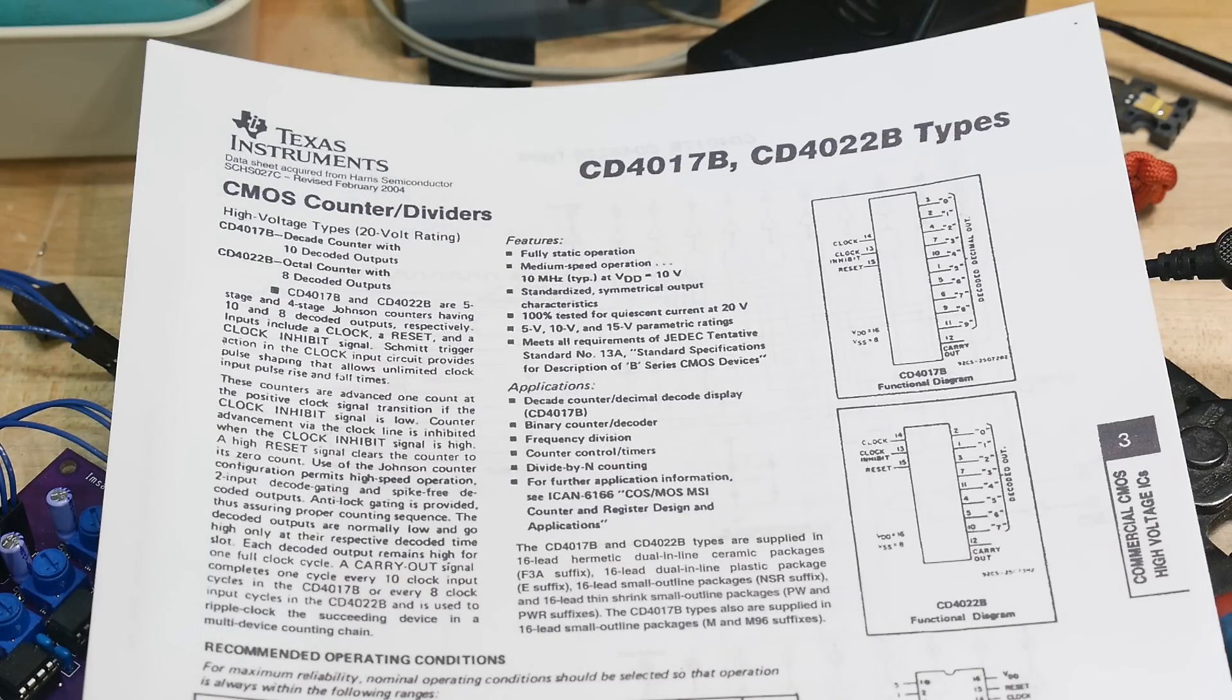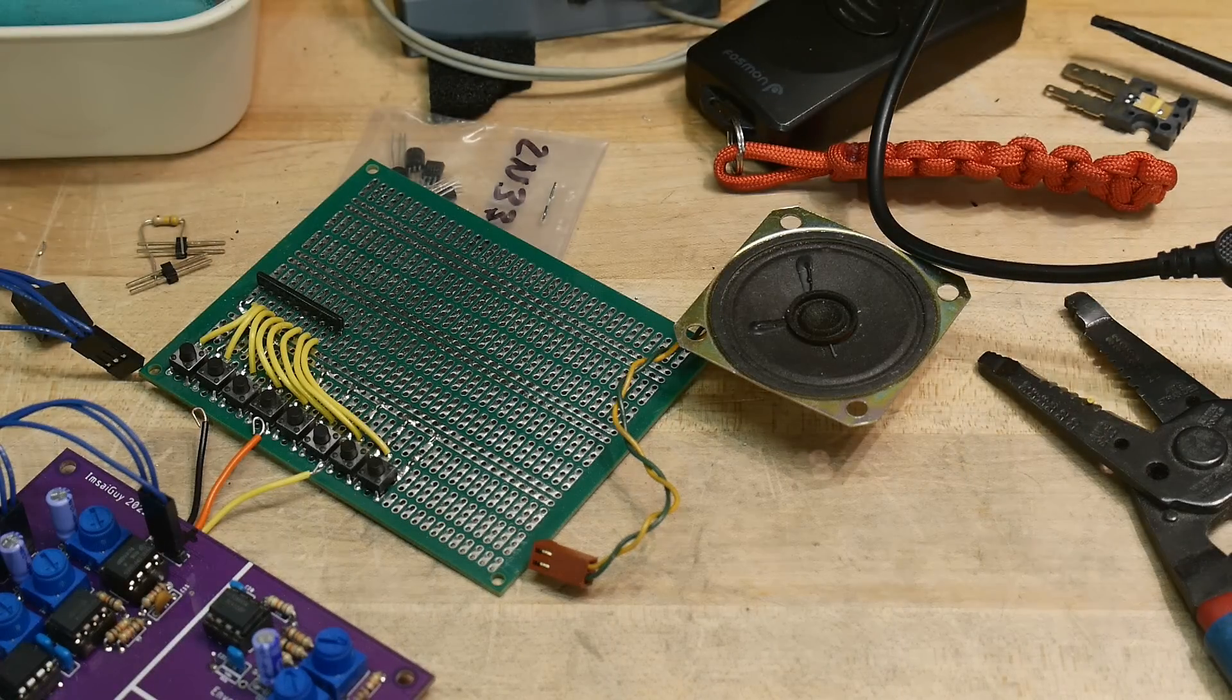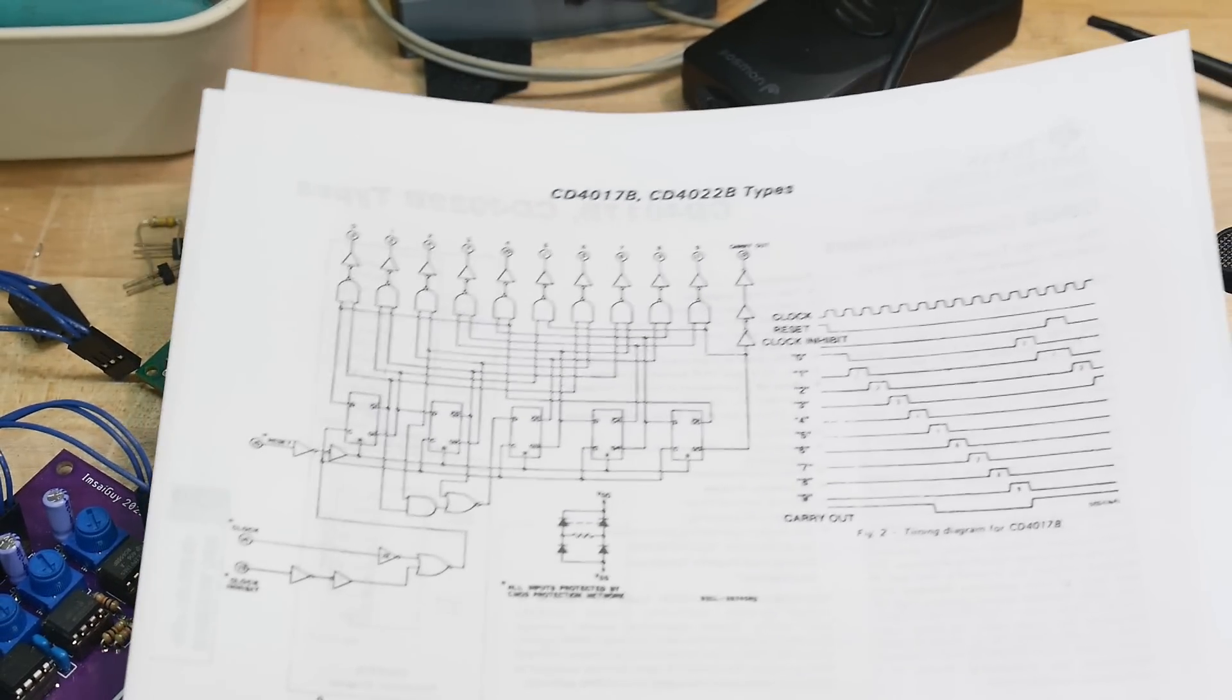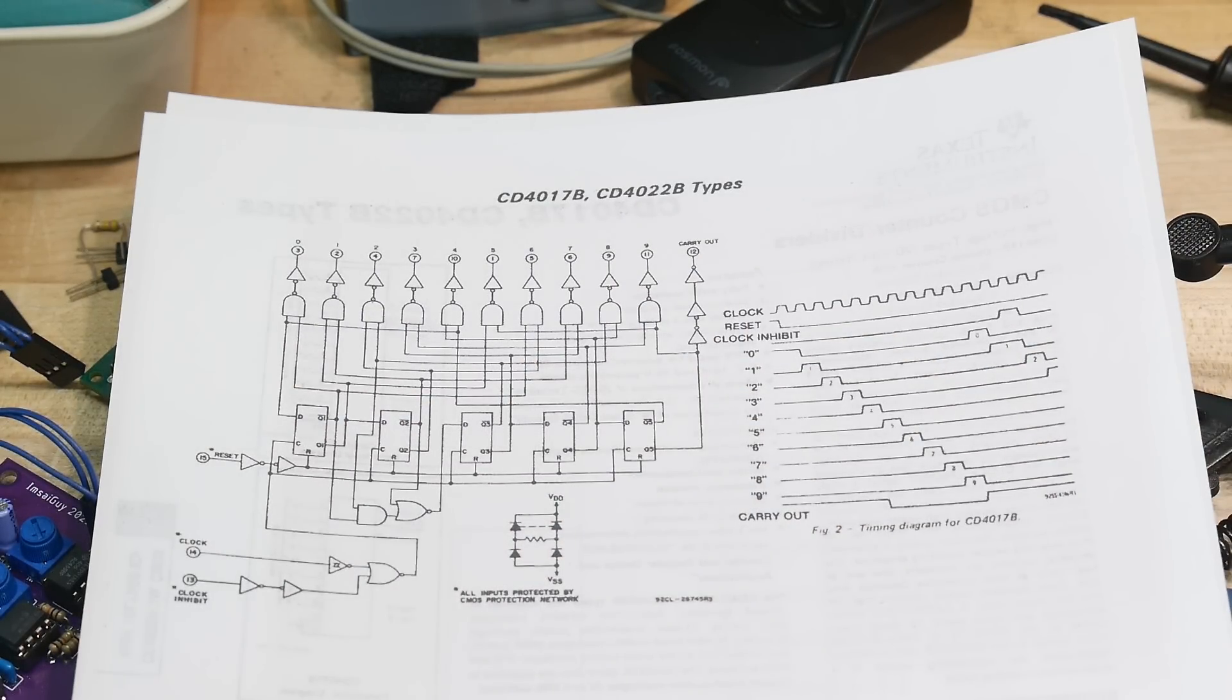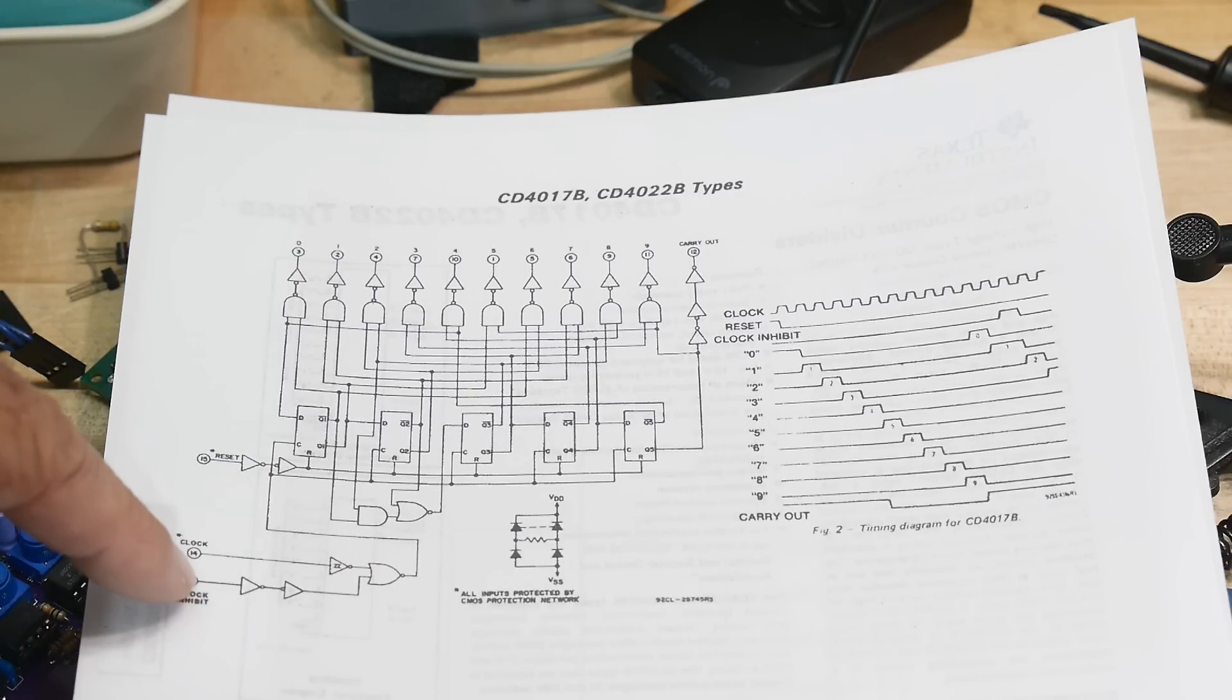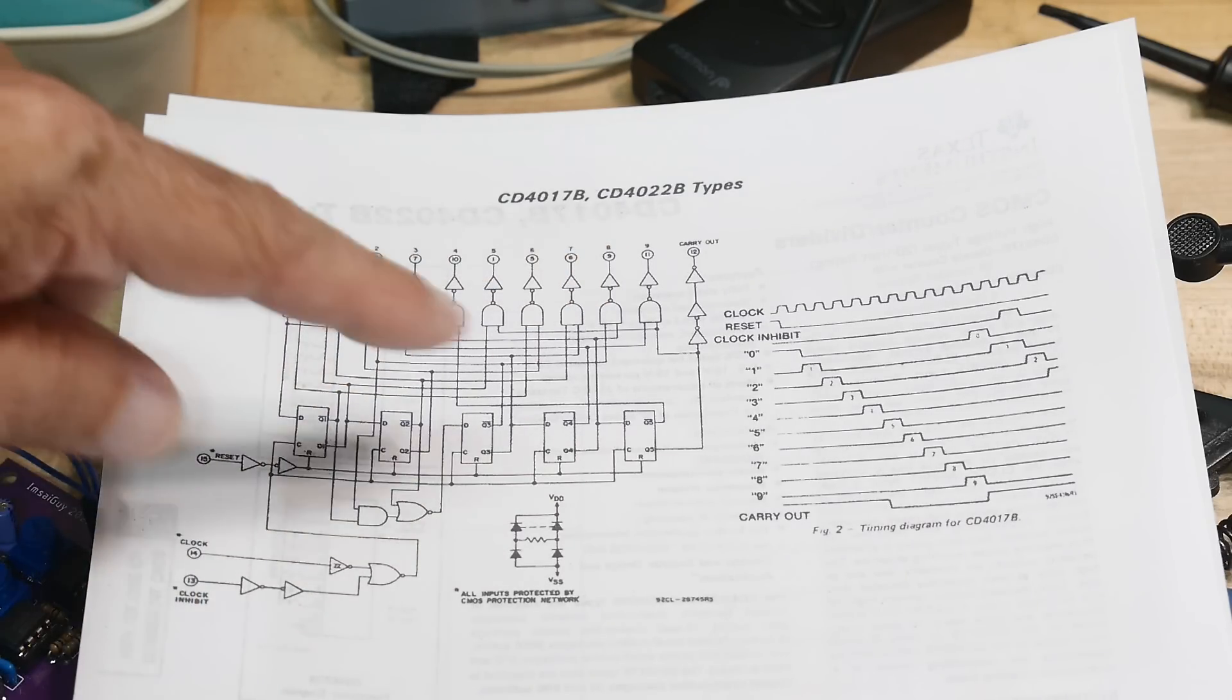So what is it? This is a counter divider. It doesn't count in binary, it counts in strange ways. It's a five-stage Johnson counter. There's a clock input, a clock enable input, and a reset so you can reset the flip-flops.